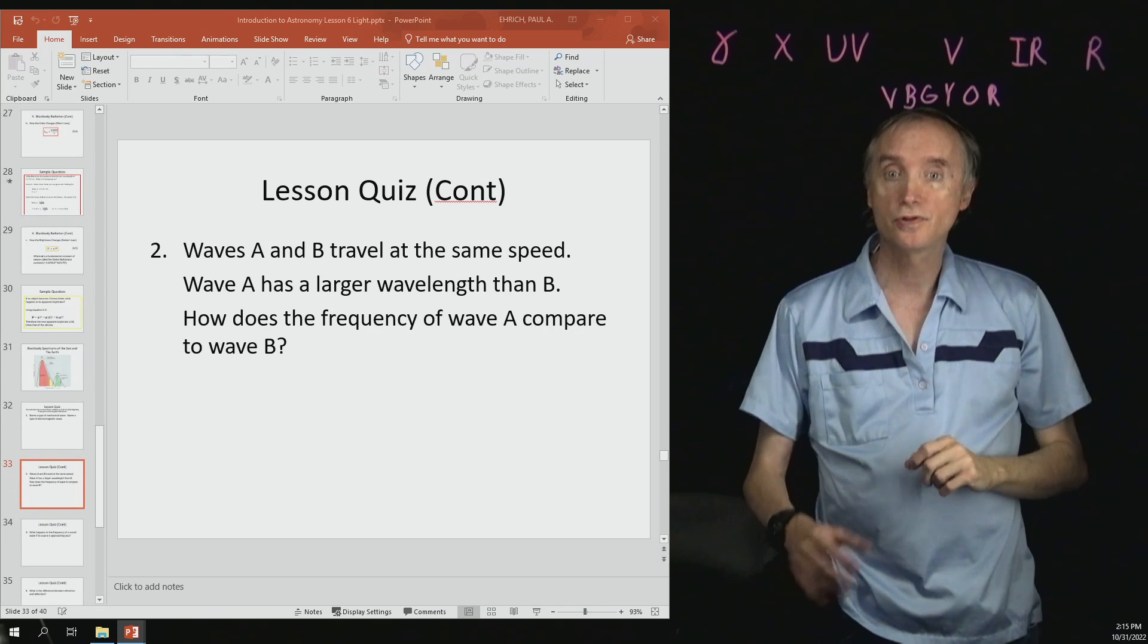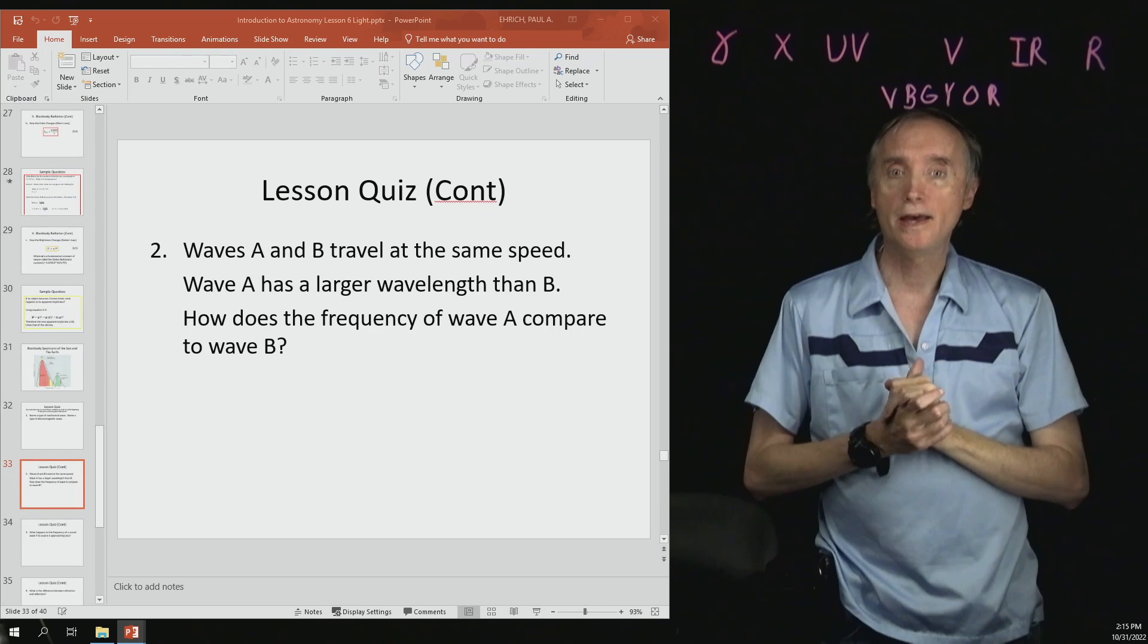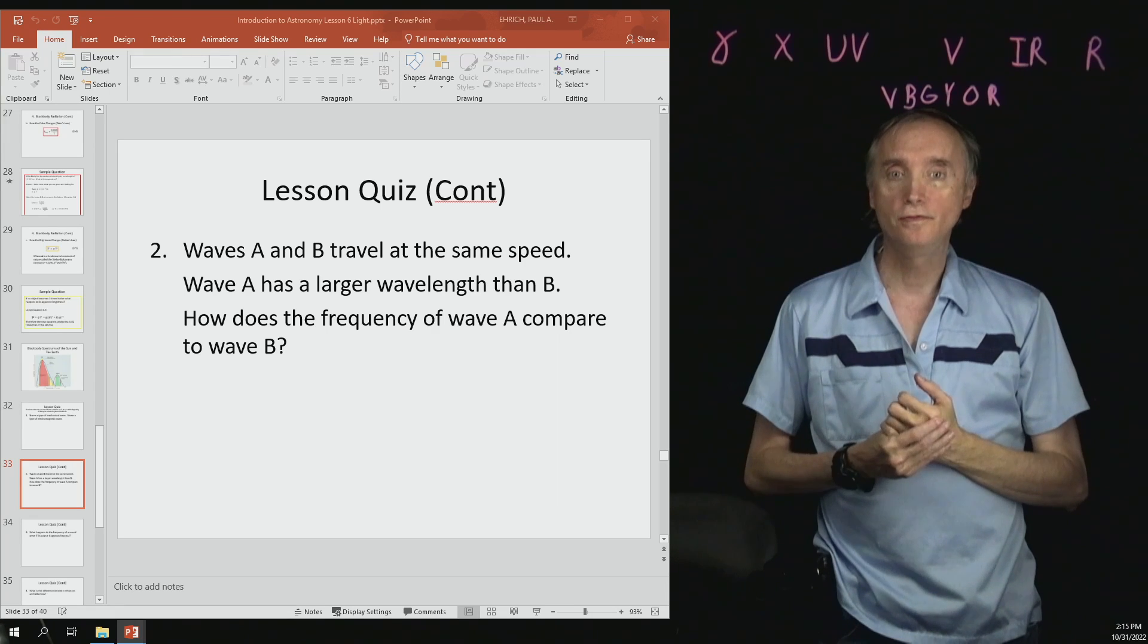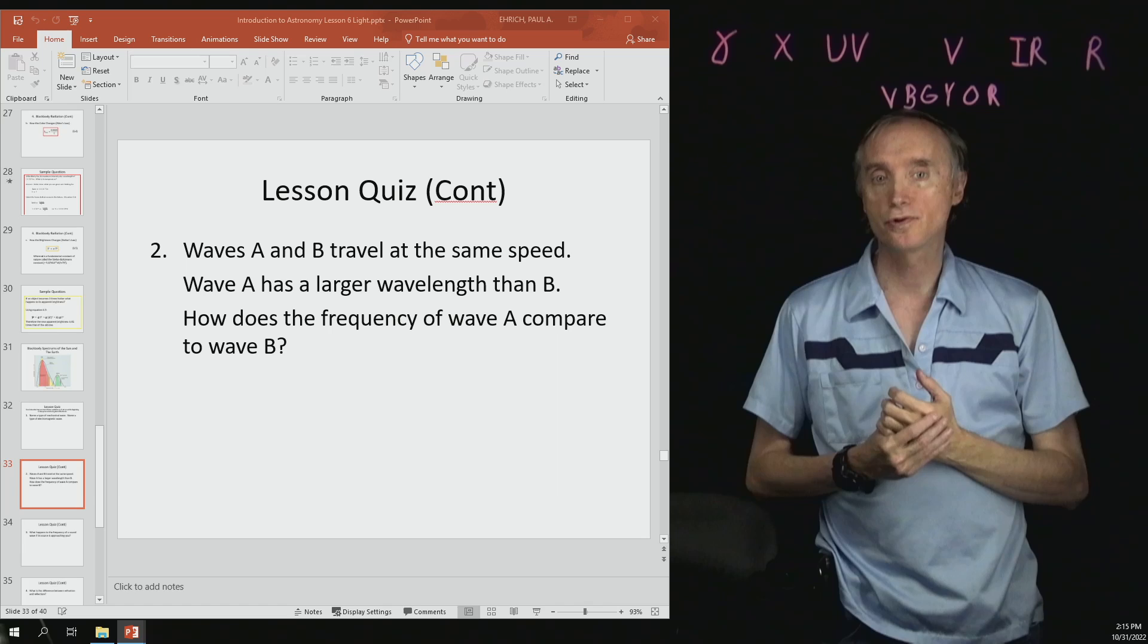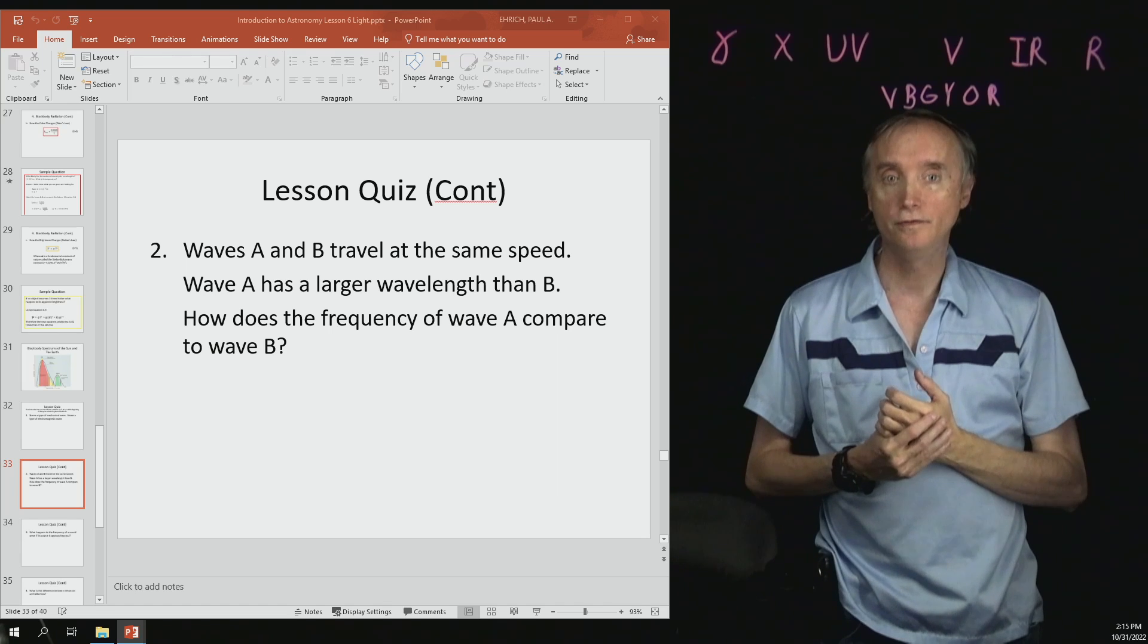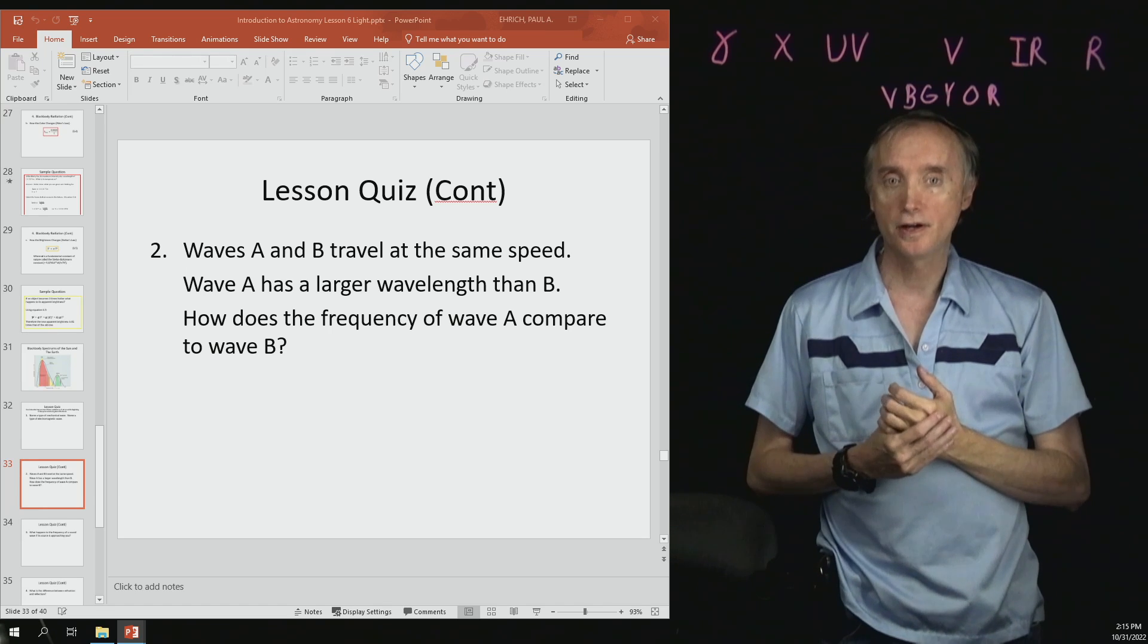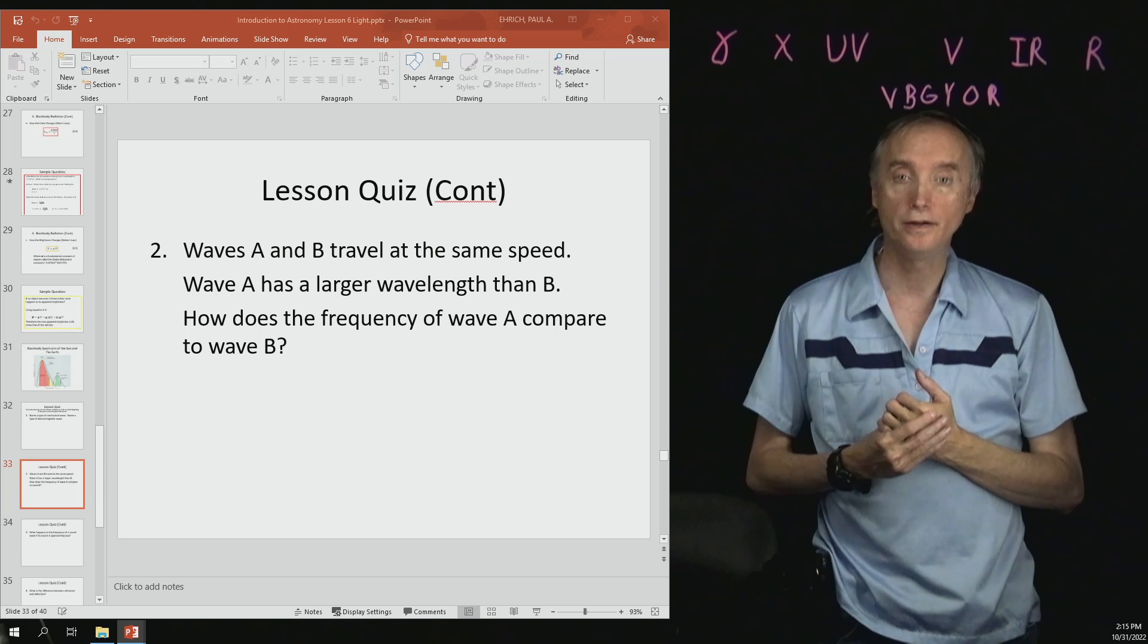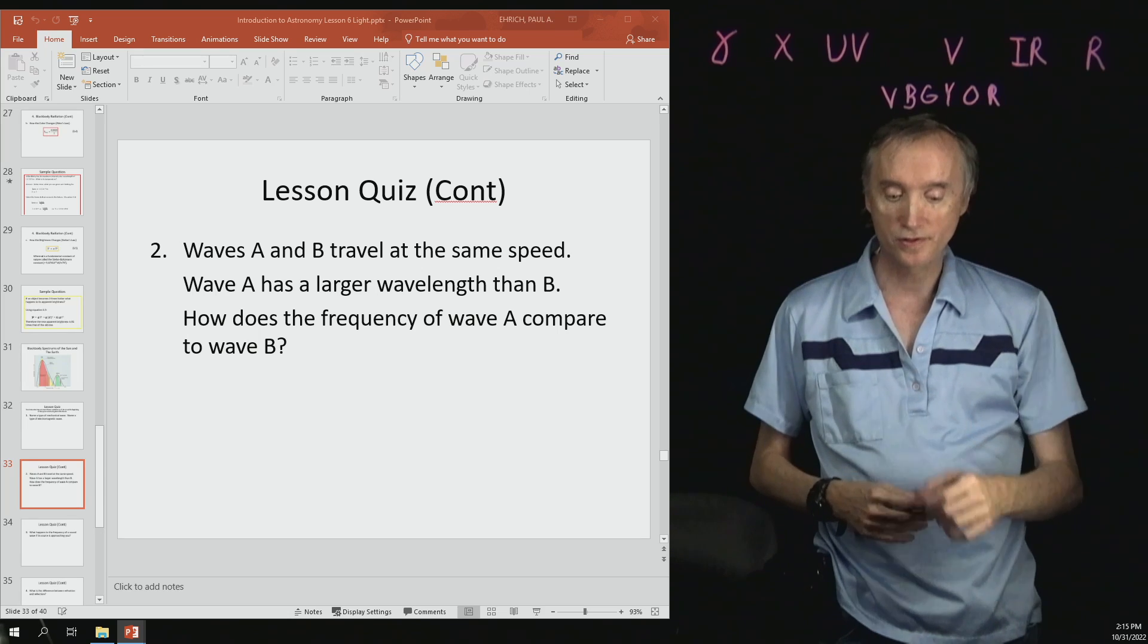Question number two, waves A and B travel at the same speed. Wave A has a larger wavelength than wave B. How does the frequency of wave A compare to wave B?